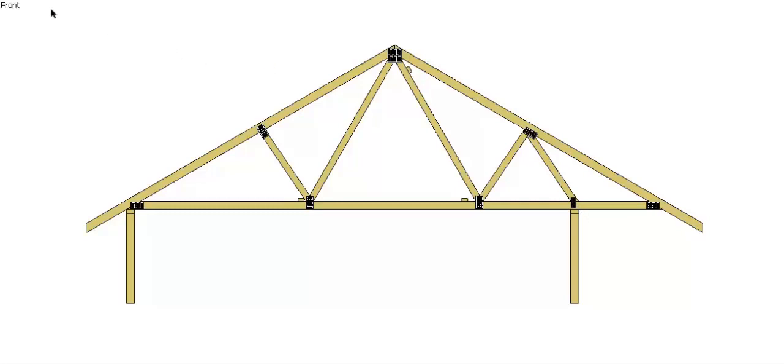So the first part of a normal truss is our top chord. In this case, it's a triangular truss, so it has two top chords, one on this side as well. If it was a parallel truss where the top chord is parallel to the bottom chord, then you would only have one top chord. But top chord is the topmost member of the truss.